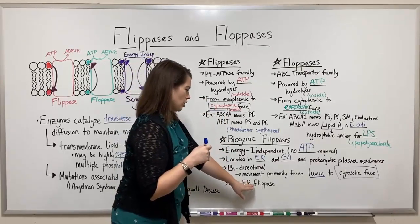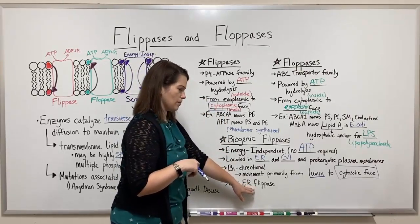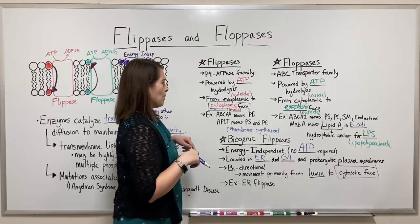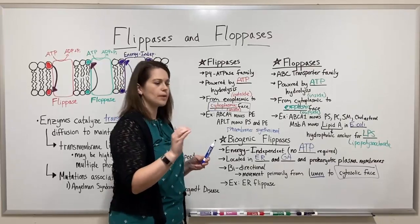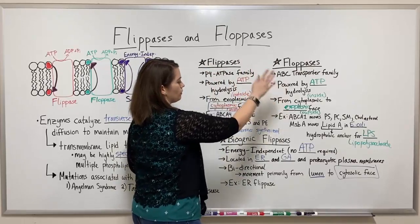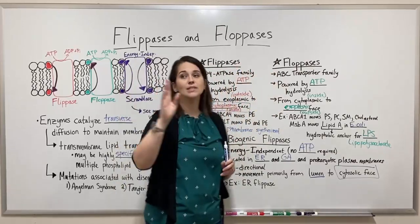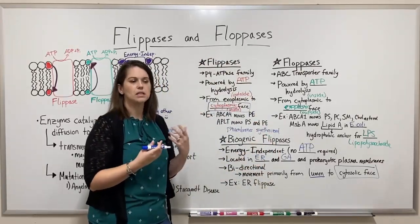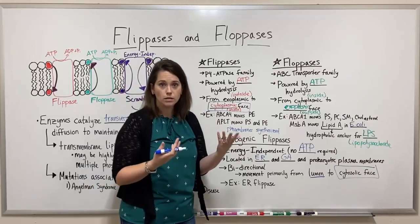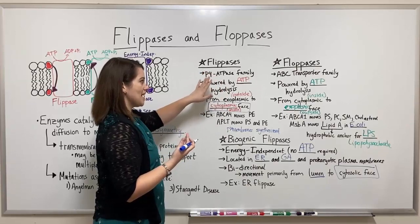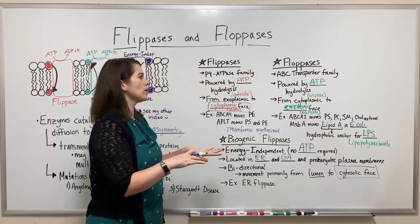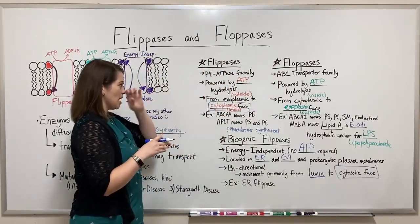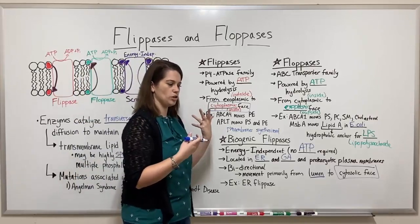The major example of a biogenic flipase is the ER flipase. One other thing to note: occasionally you will hear flipases, flopases, biogenic flipases, and even scramblases all referred to simply as flipases. This is not the most correct usage. The most correct approach is to characterize them based on energy usage and direction of transport to distinguish between flipases, flopases, and scramblases, though sometimes flipase is used as a more generic term.